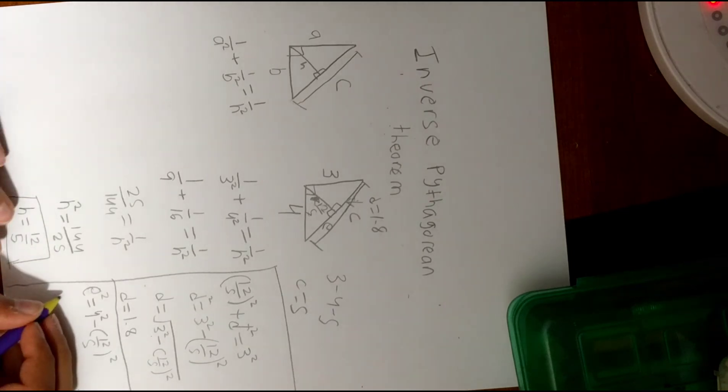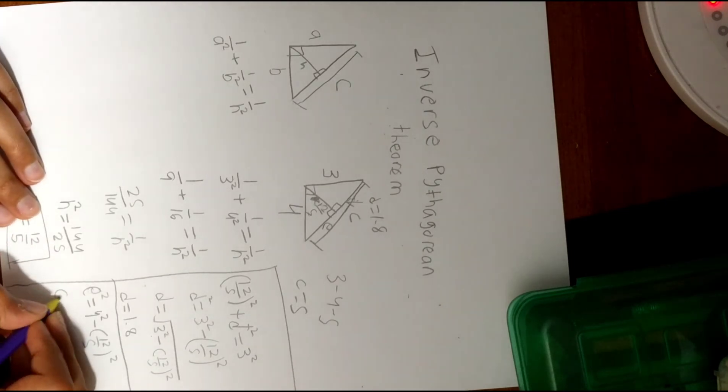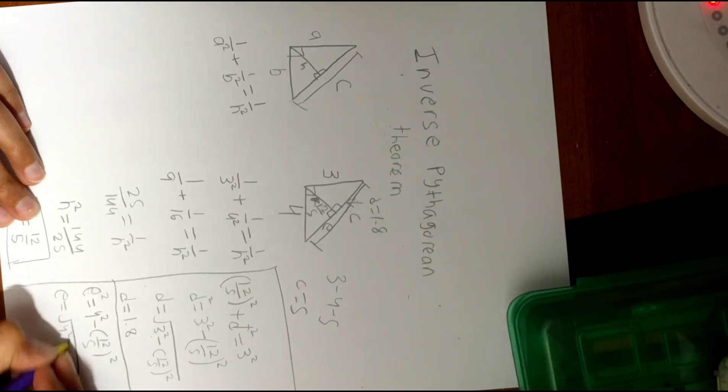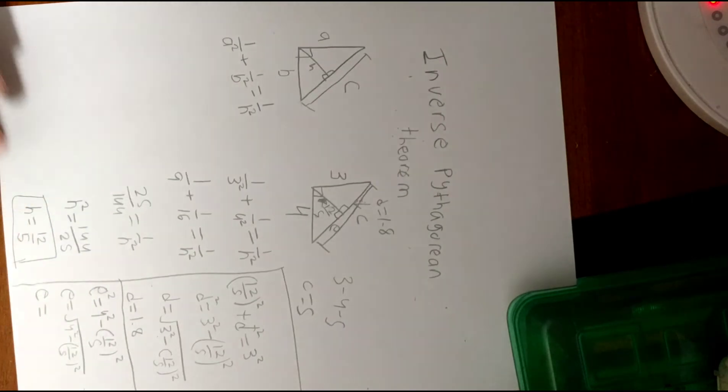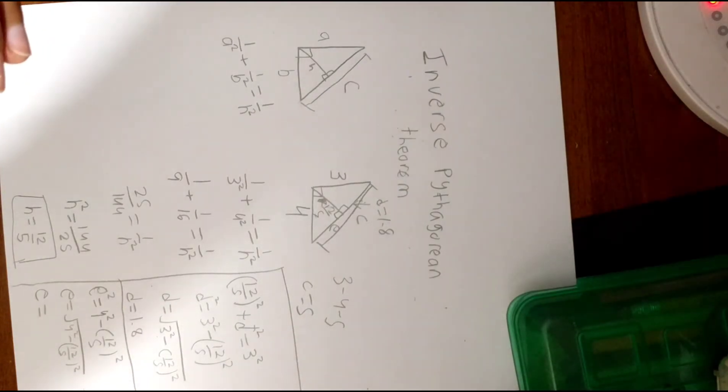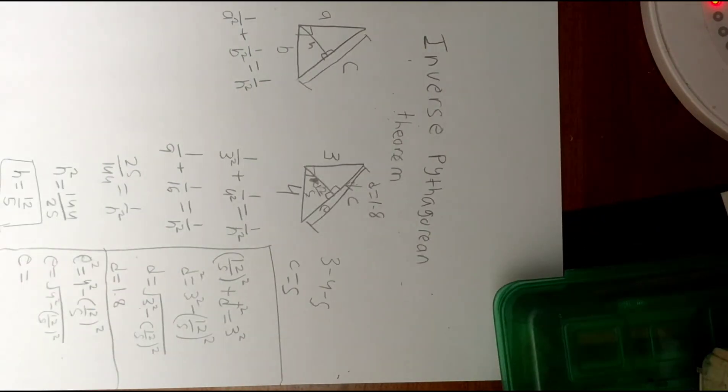You can set that up as e squared equals the hypotenuse squared minus the leg squared. And of course you'd get e equals the square root of 4 squared minus 12 by 5 squared. Simplifying that would get you an answer of... you would indeed get a value of 3.2.